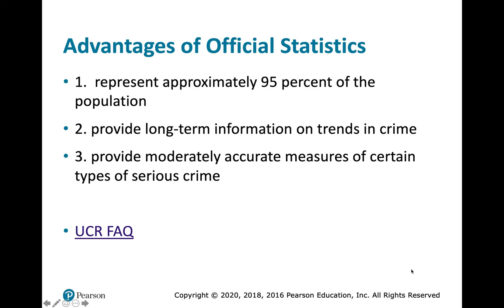The advantages of official statistics like the UCR: they represent approximately 95% of the U.S. population, provide long-term information on crime trends over periods of years, and offer moderately accurate measures of certain types of serious crime.